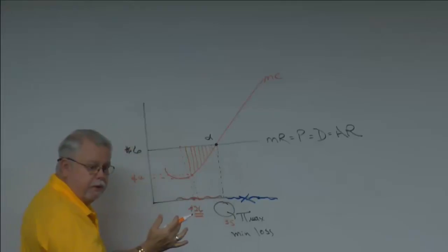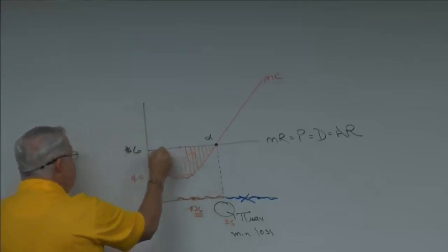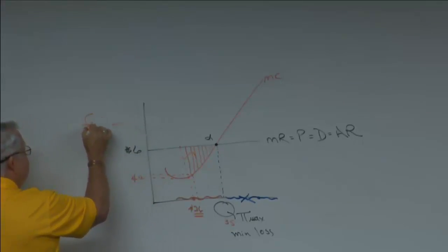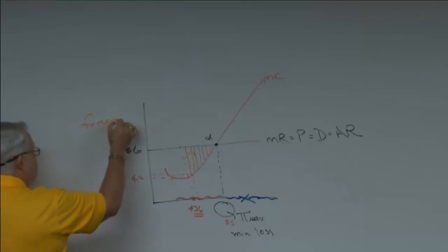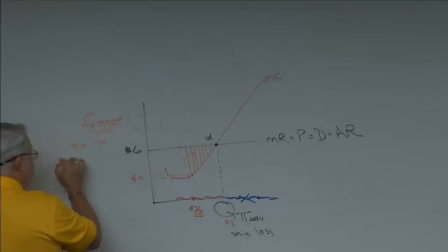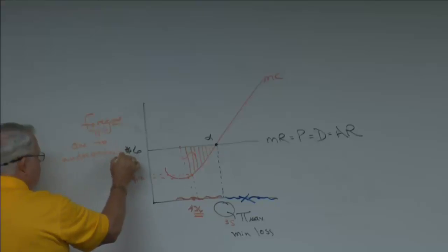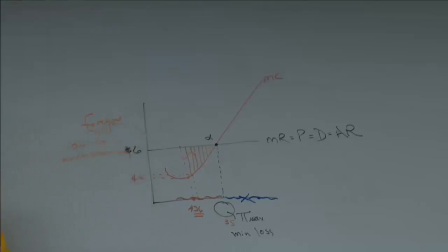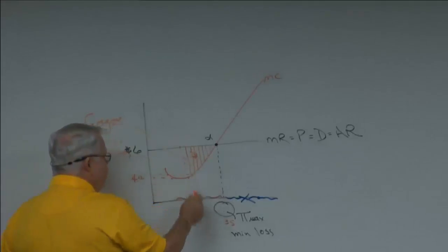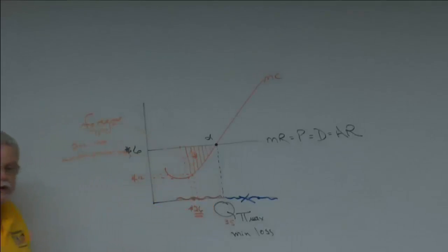If I stop producing at unit 26, I'm giving up all the other money I could have made. I call this 'foregone profit due to under-production' — you are producing less than the amount at point alpha. This shaded area represents foregone profit if I cut my production at too low a level, below the alpha quantity.